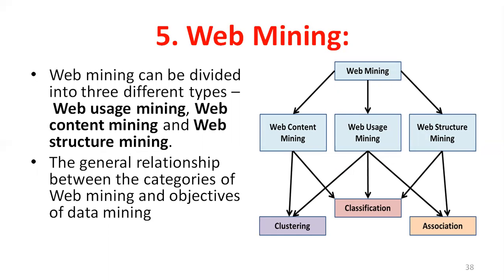For web usage mining, classification and association techniques are used. Association involves frequent pattern identification using algorithms like Apriori, FP-growth, and vertical pattern algorithms. Clustering techniques group data based on similarity, using algorithms such as k-means, k-medoid, DBSCAN, hierarchical clustering, and density-based clustering.